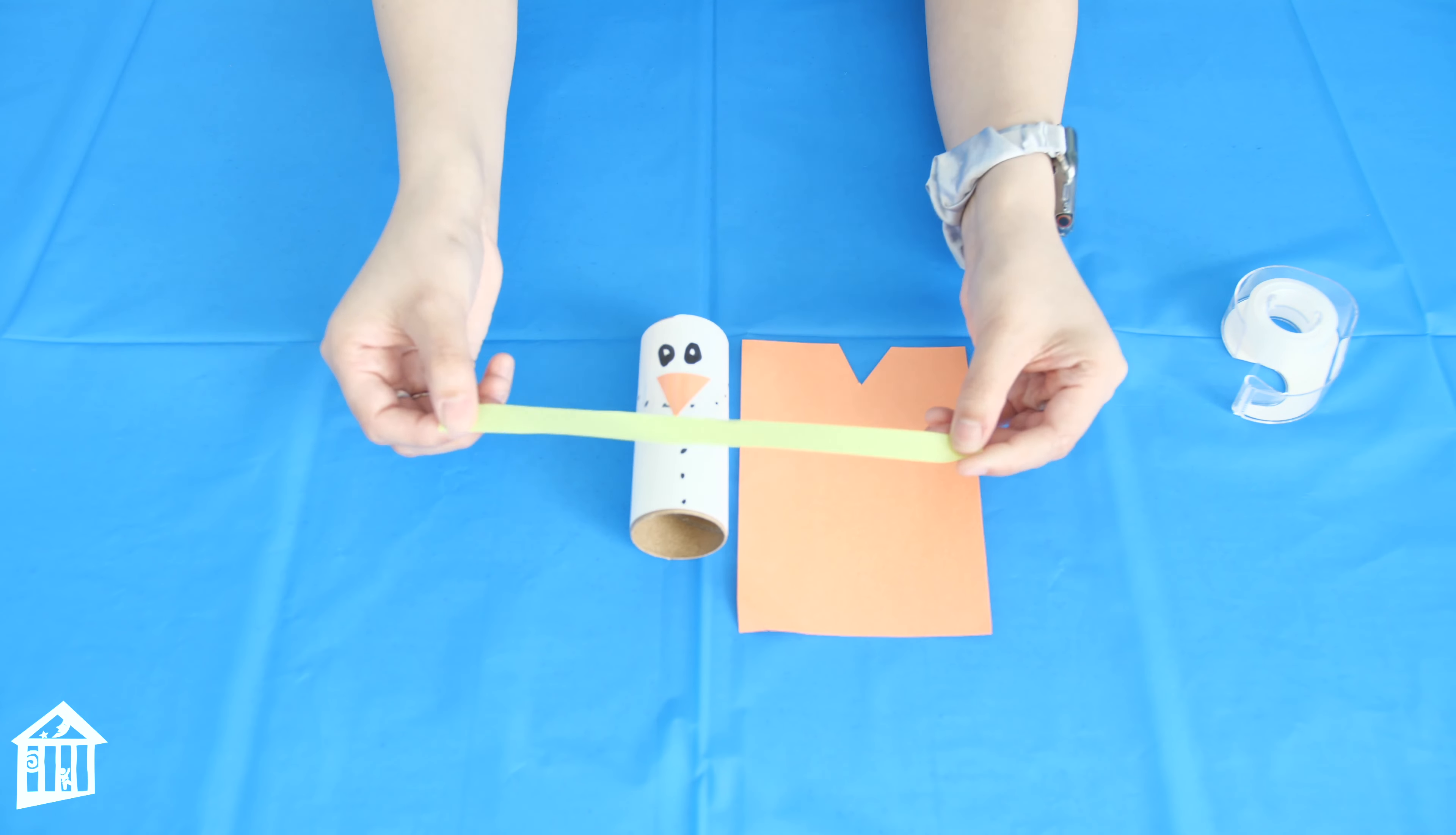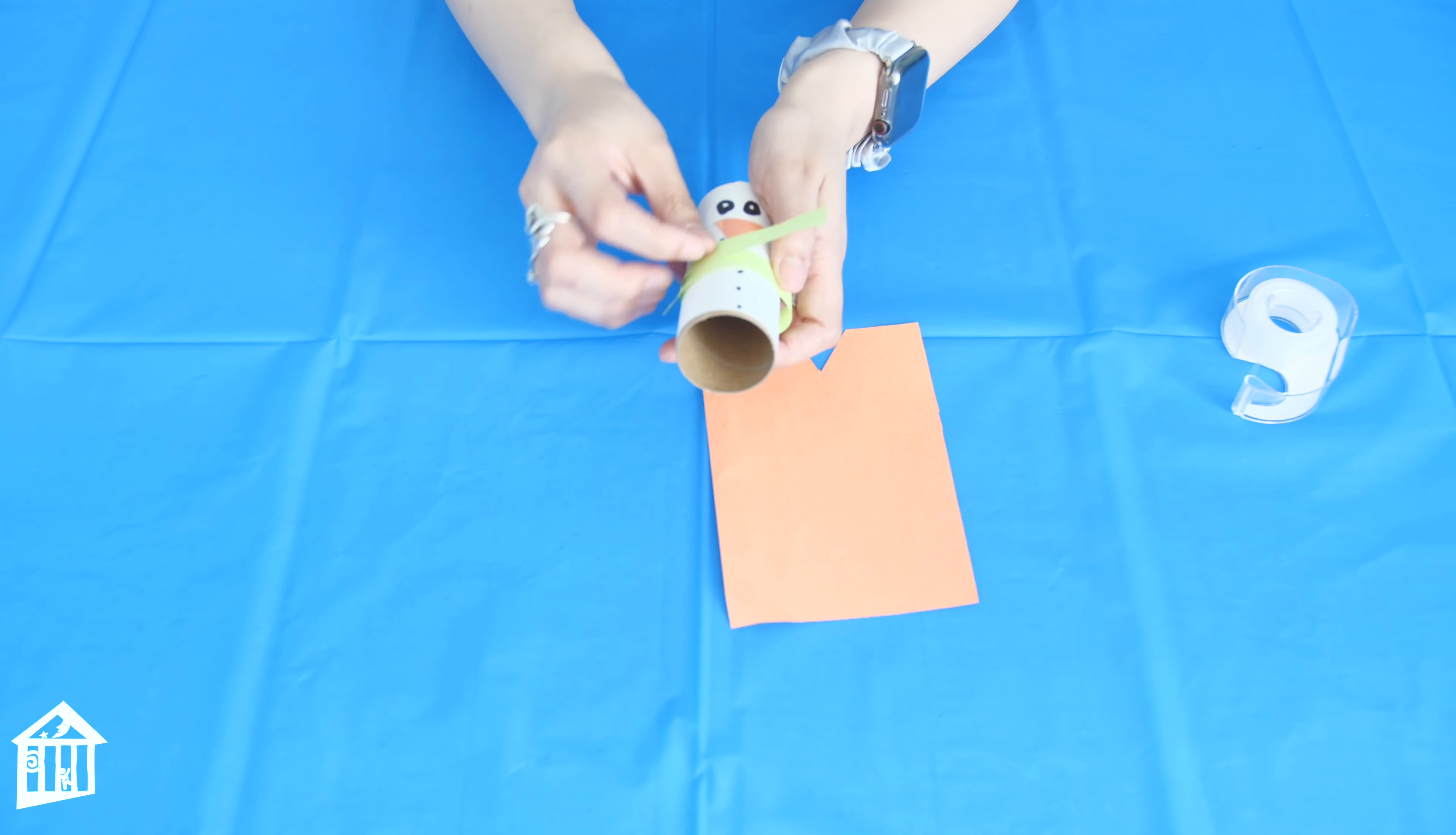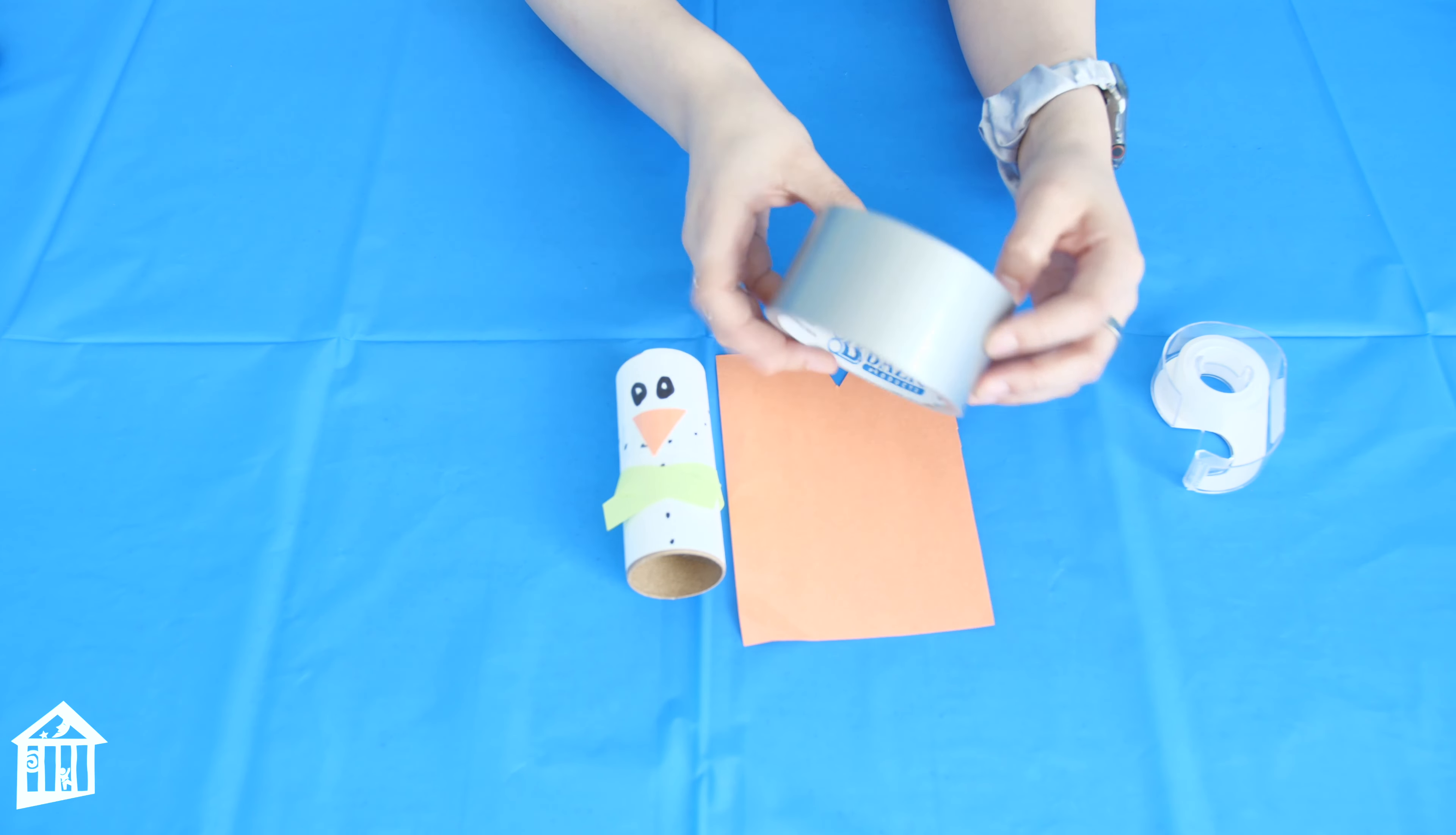Next you can tell it needs a scarf or a tie, so you can grab your green piece of construction paper to make a scarf or a tie. You just have to add a piece of tape right in the middle. And if you think these pieces are a little bit too long, you can just cut them.